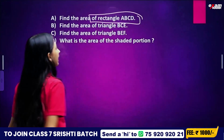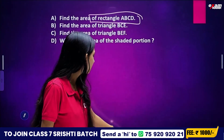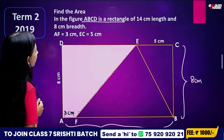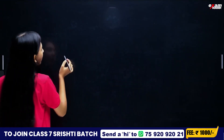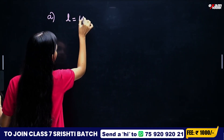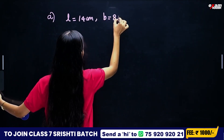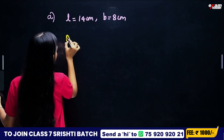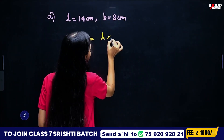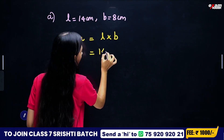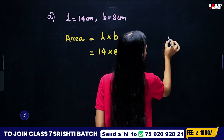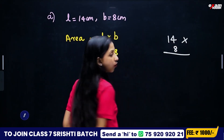How simple is this rectangle? What is the area? The rectangle has length 14 cm and breadth 8 cm. Area is equal to length into breadth. The length is 14 and the breadth is 8. 14 into 8 equals 112.